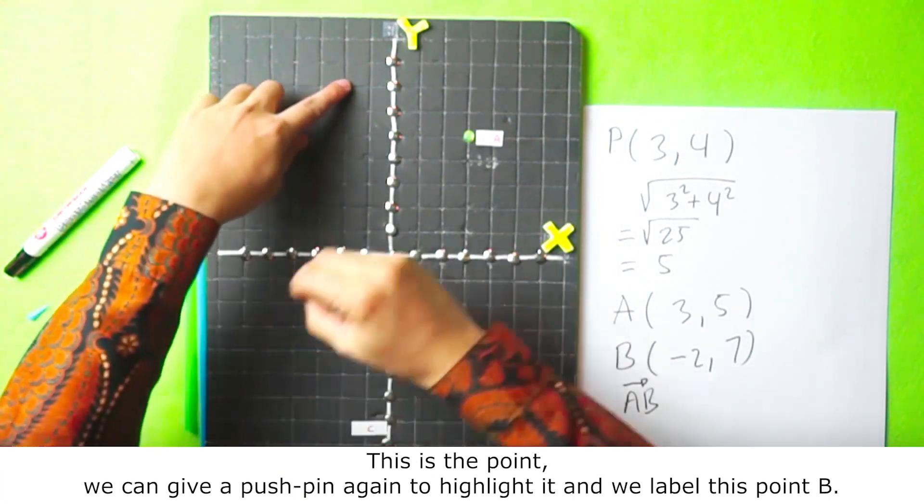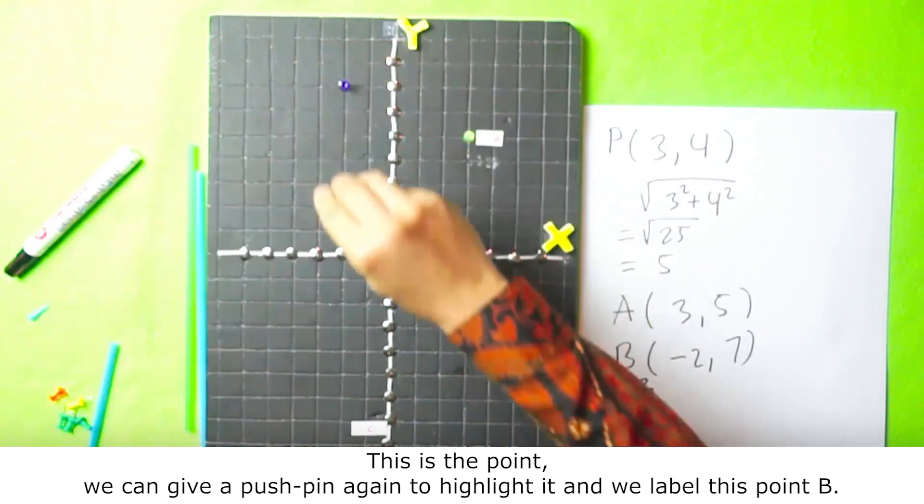This is the point. We can give a pushpin again to highlight it and we label this point B.